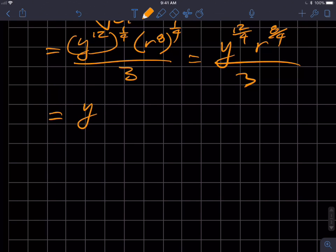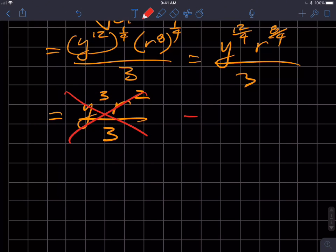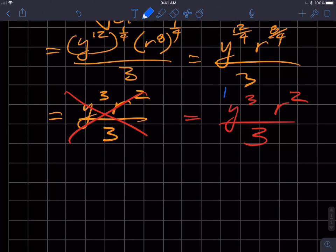So here's my supposed answer: 12 divided by 4 is 3, so I get y cubed. 8 divided by 4 is 2, so I get r squared, and then it's all over 3. The unfortunate thing is this is incorrect. The correct answer is y cubed r squared over 3, but I have to have this absolute value of y cubed. Big question is why.